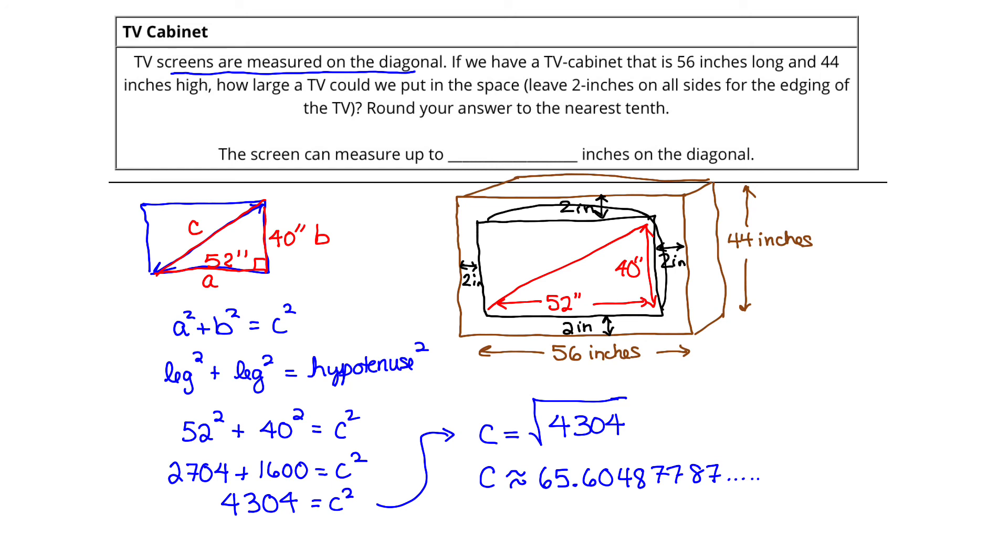So we want to refer back to our problem to be very careful about what we're rounding to. We're asked to round our answer to the nearest tenth, which is the first decimal place. So we want to go right here to this one. Looking to the right, we see we have a small number, so we're simply going to keep that 6. And that means that C, rounded to the nearest tenth, is going to be 65.6. So what do we say? The screen can measure up to 65.6 inches on the diagonal.